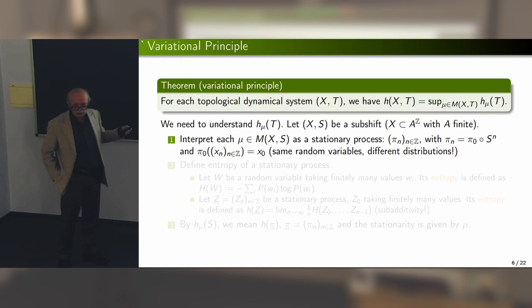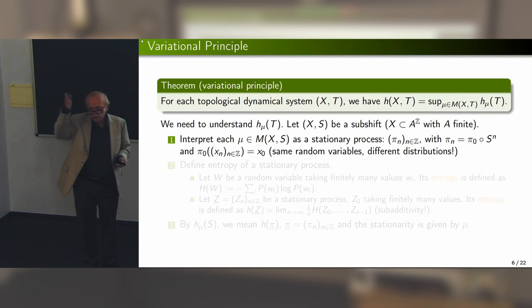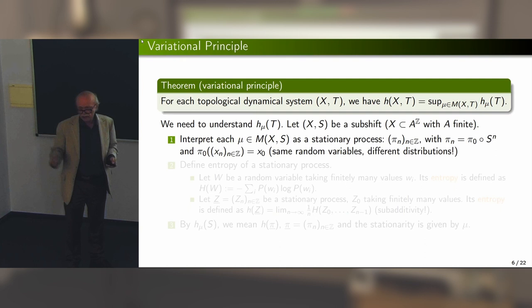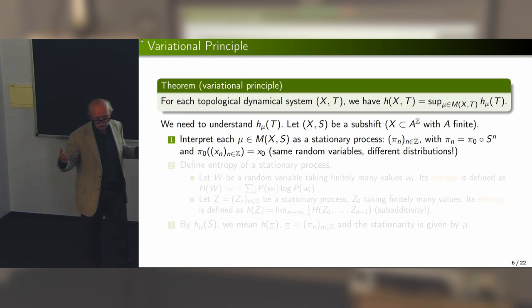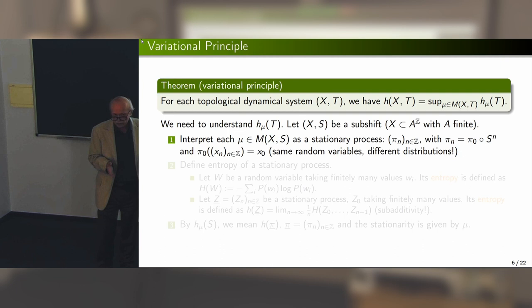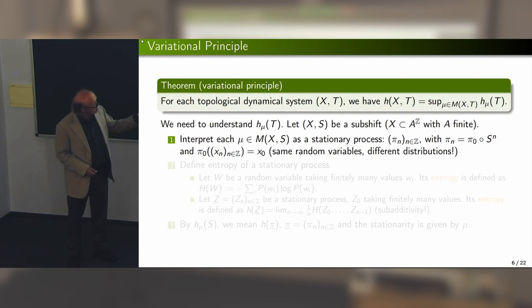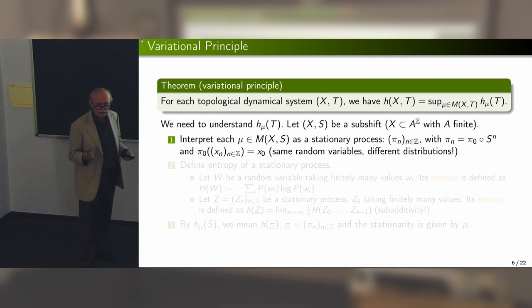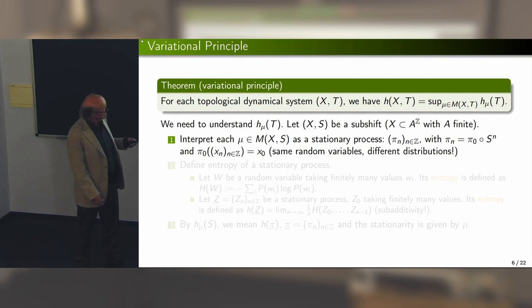We need to understand the entropy of the measure. The crucial observation: because we have a subshift with the left shift S, we have natural projections onto coordinates — pi_0, pi_1, pi_n. We may think of pi composed with S to the n as a stochastic process. An S-invariant measure on the subshift is nothing but a stationary process. If the alphabet is finite, we get a stationary process taking finitely many values. The only thing we must understand is how to define the entropy of a process taking finitely many values.